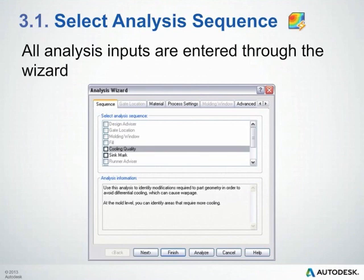Next, you'll select your analysis sequence within the analysis wizard, which is also where you'll put your process settings. In this case, we'll select Fill as our analysis sequence. If what you want to select is grayed out, you can click on it and under the analysis information window it will tell you what you're missing — for example, that you need to create an injection cone, or that you need cooling lines before running a cooling analysis, or that you may not have the appropriate license.